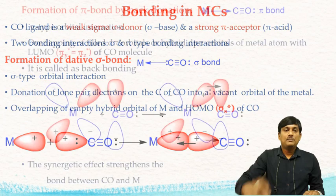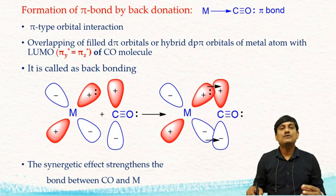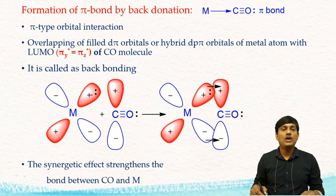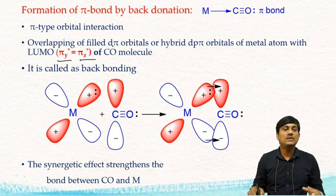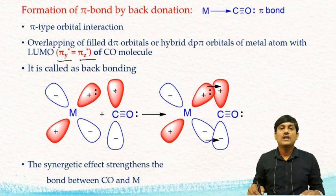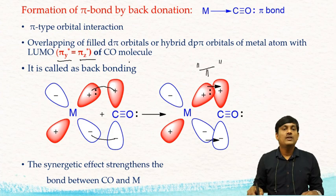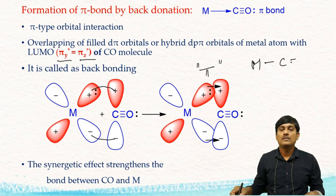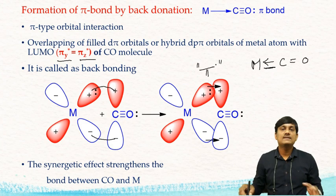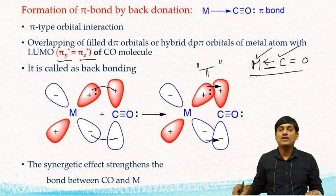In pi-type interactions, there is overlap of filled d-pi orbitals (or dπ hybrid orbitals) of the metal with the LUMO of CO — that is, π*y and π*z — which are empty orbitals. The filled metal orbitals and the empty CO orbitals undergo side-on overlap, forming a pi bond. Due to having two bonds between metal and carbon, there is a synergic effect which strengthens the metal-carbon bond, explaining the existence of metal carbonyls.